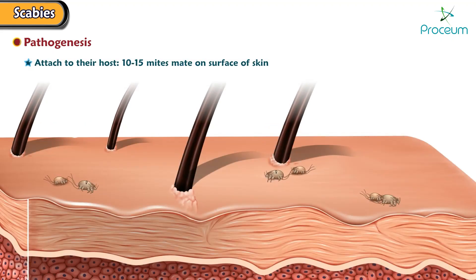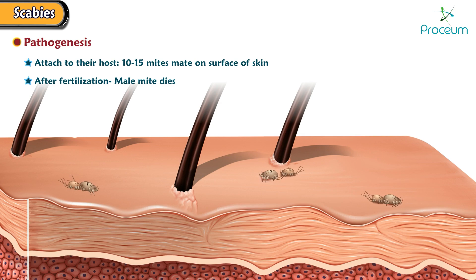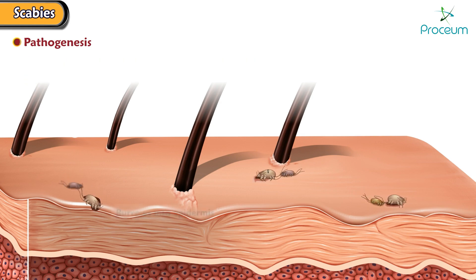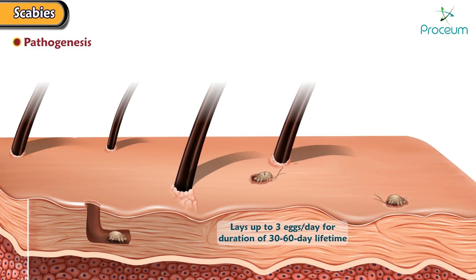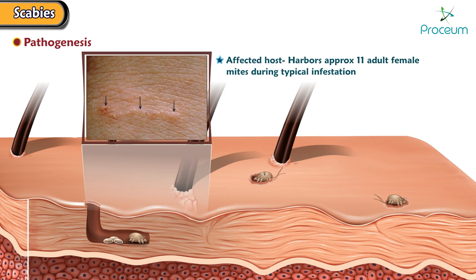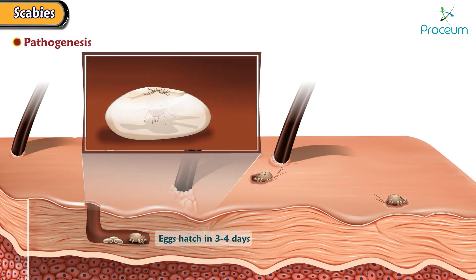Once attached to their host, 10 to 15 mites mate on the surface of the skin. After fertilization, the male mite dies. The female mite burrows into the epidermis of the host, where she lays up to 3 eggs per day for the duration of her 30 to 60-day lifetime. An affected host harbors approximately 11 adult female mites during a typical infestation. The eggs hatch in 3 to 4 days.